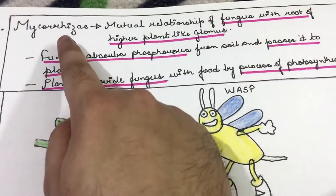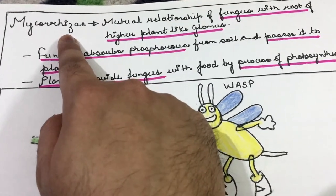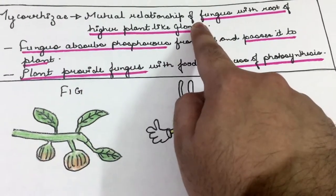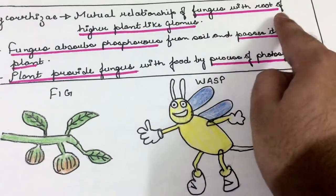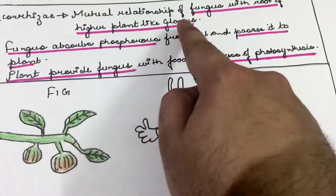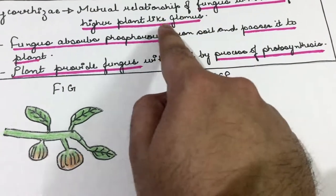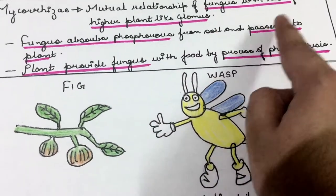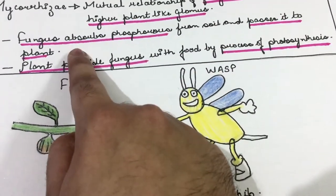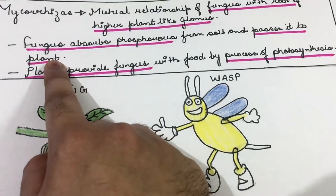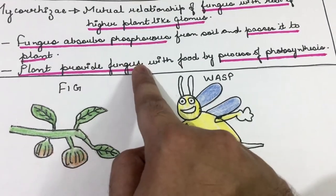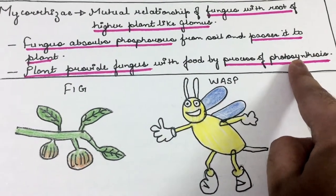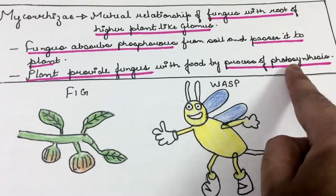Another example of mutualism is mycorrhiza, which is a mutualistic relationship of fungus with the roots of higher plants, like Glomus. The fungus absorbs phosphorus from the soil and passes it to the plant, benefiting the plant. In return, the plant provides the fungus with food through the process of photosynthesis, so the fungus is also benefited.